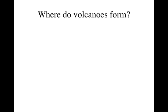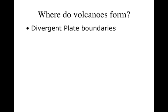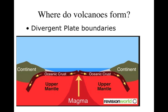Where do volcanoes form? They form at divergent plate boundaries, because the plates are moving away from each other and when they move away something has to take their place — that's the magma coming up from underneath. Here's an example: we have our oceanic crust spreading apart in the ocean, and we get the magma welling up in between, making our oceanic ridge.